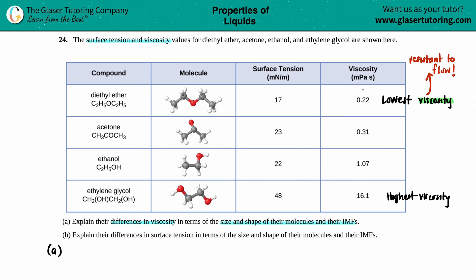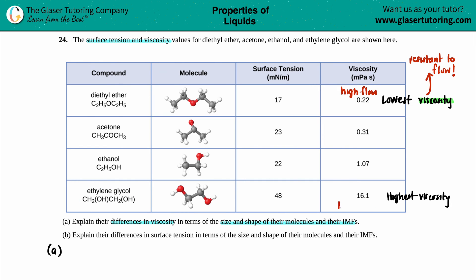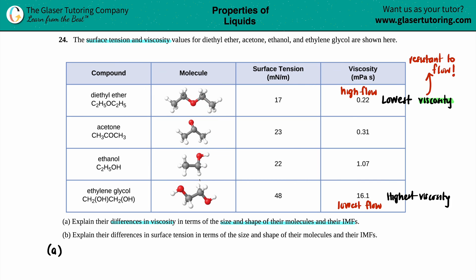In terms of these values, diethyl ether would flow the most — it has the lowest viscosity — as opposed to ethylene glycol, which has the highest viscosity and the lowest flow, kind of like the honey idea. Now, why is this? We have to look at the structure, shapes, and sizes and the intermolecular forces.